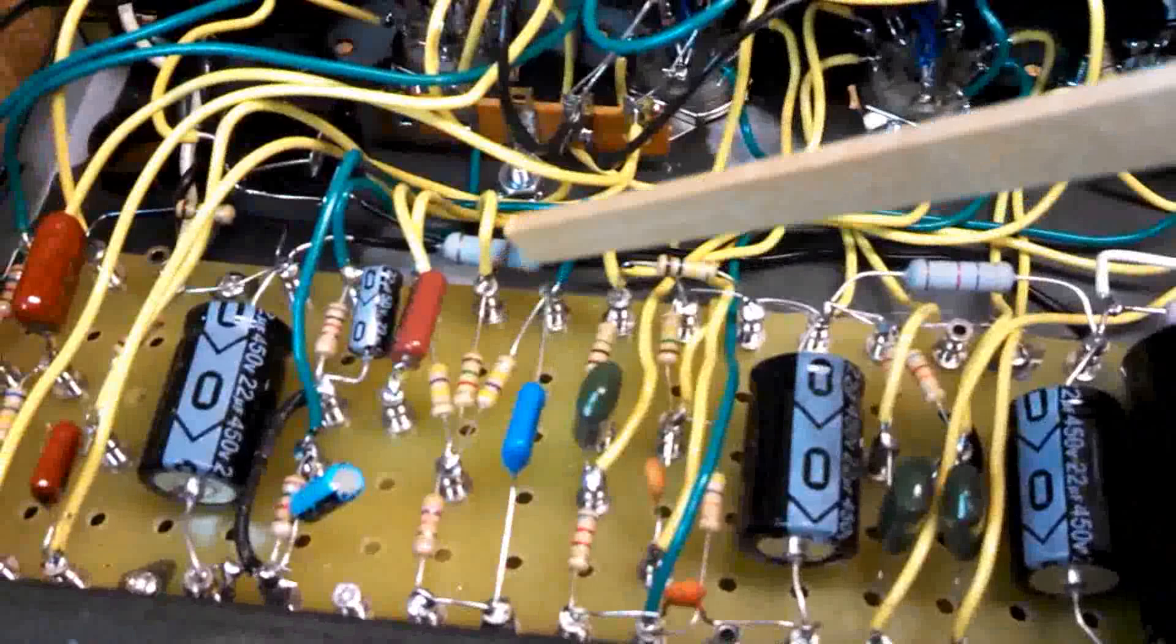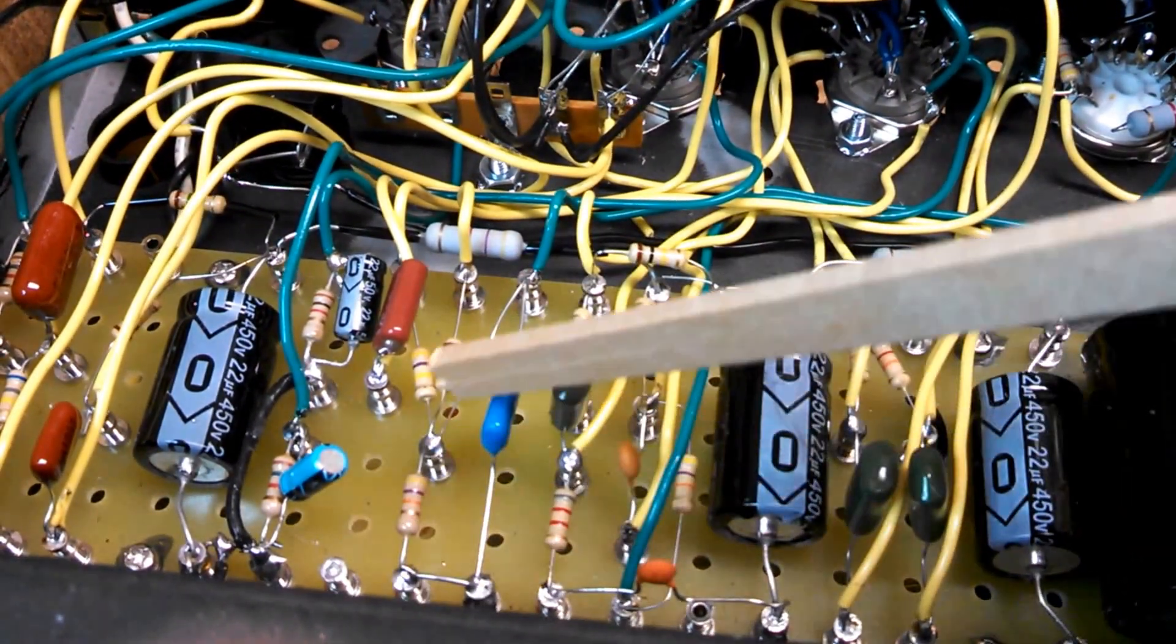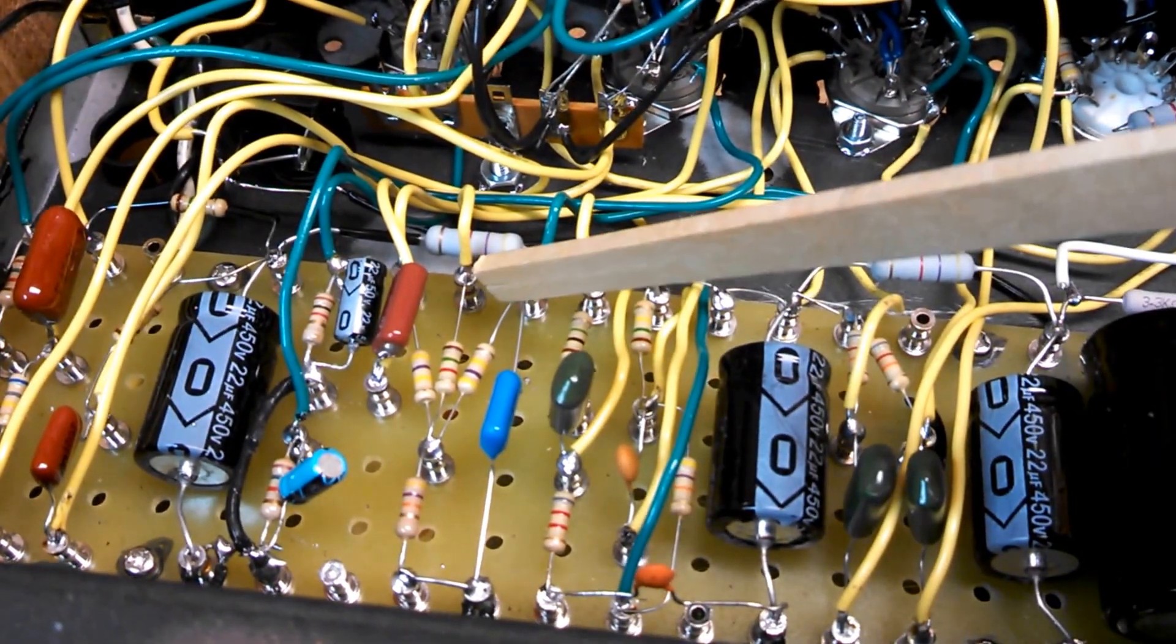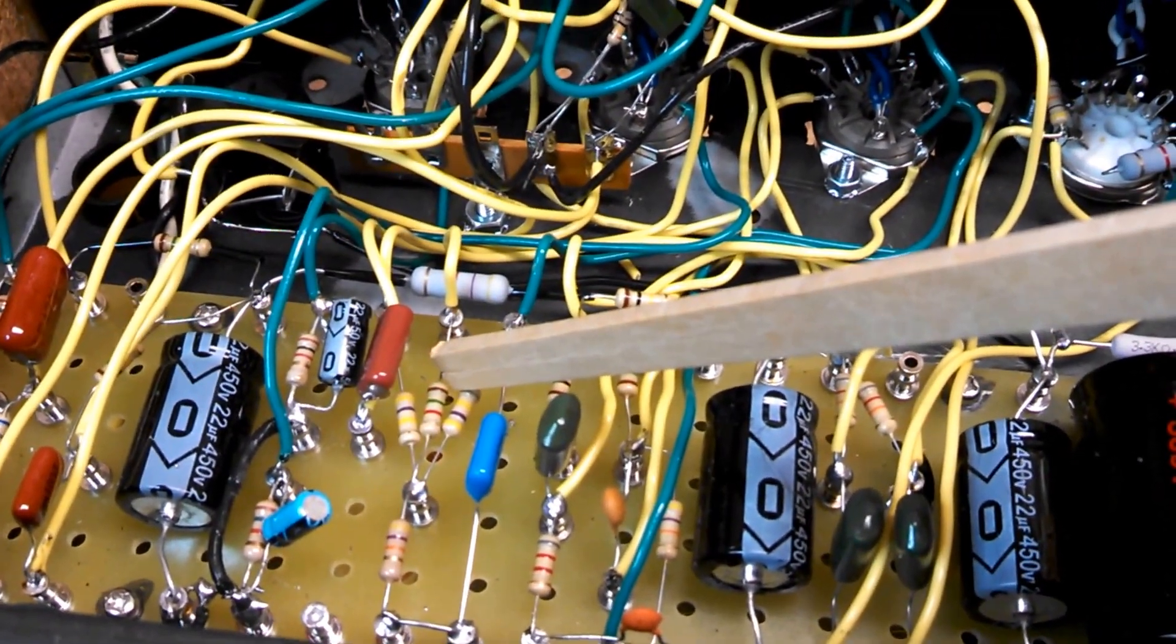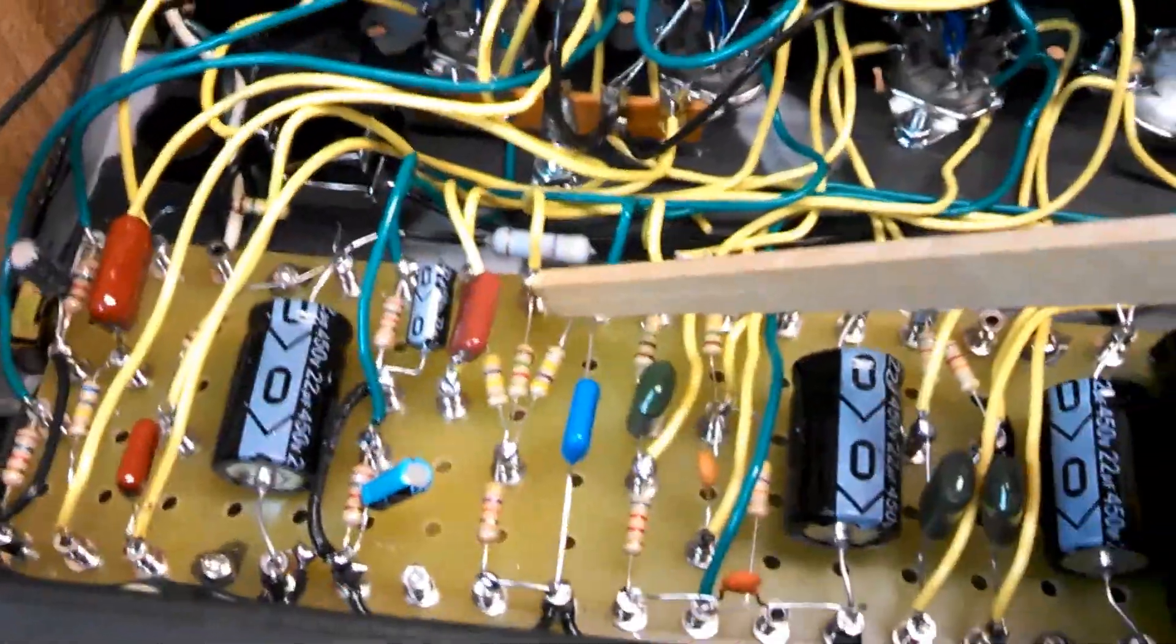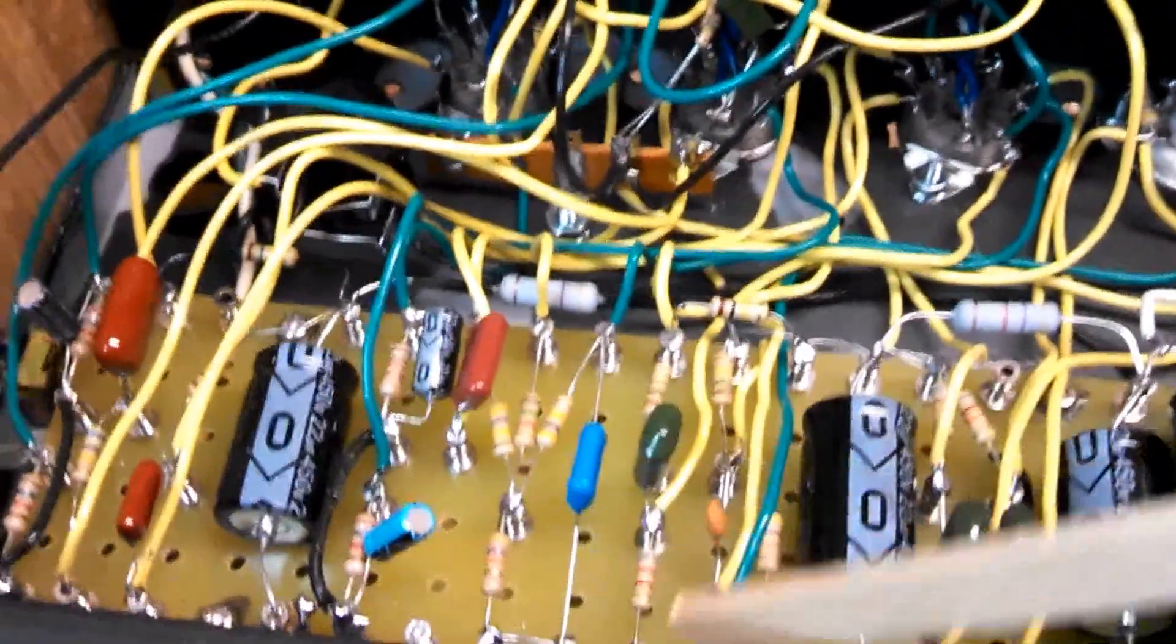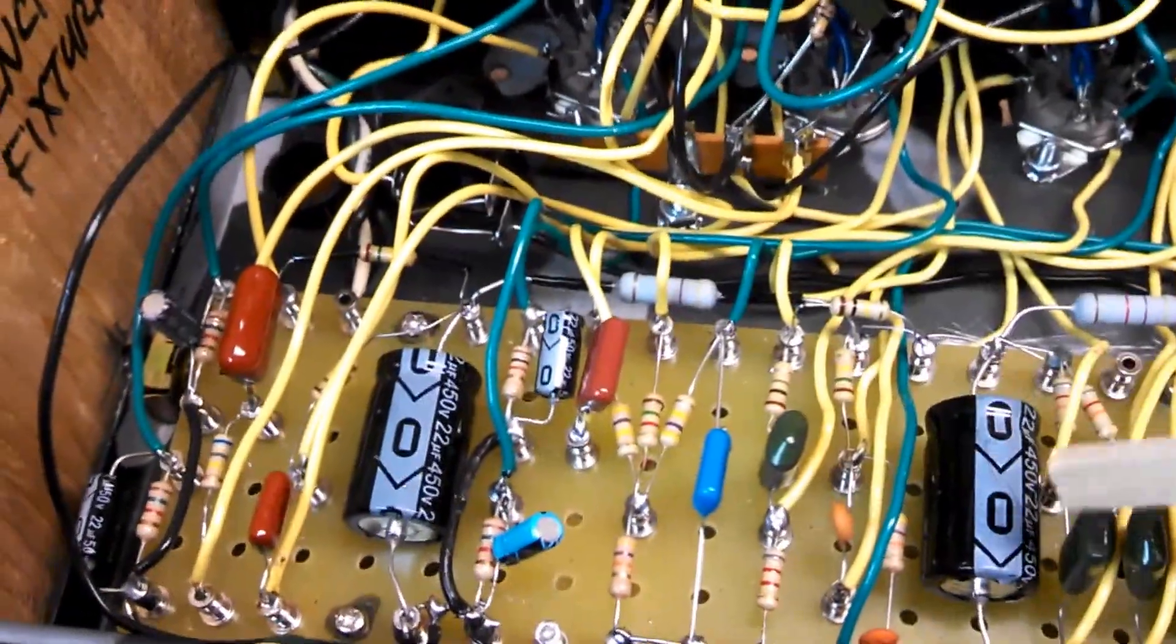The other thing I did is I put in a long tail pair driver circuit here for the tubes as opposed to the cathode follower phase inverter. Mostly because there's a lot written about it and they're in all the classic amps, and I don't have any amp that has one, I thought it'd be good to try. It seemed to work out pretty well, so no complaints there.